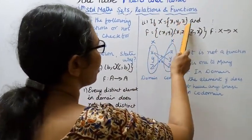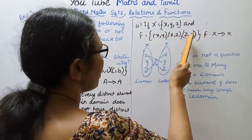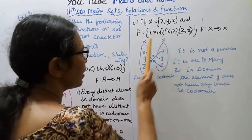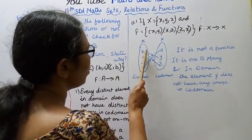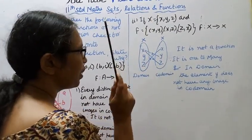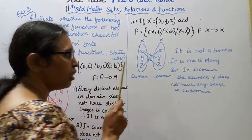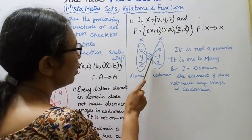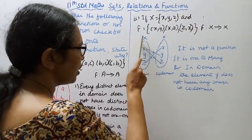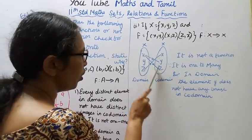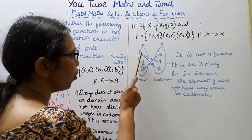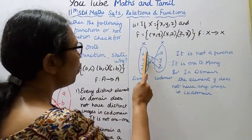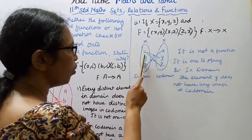If X equals {x, y, z} and F equals {(x, y), (x, z), (z, x)}. Here from X to X, the function is: x maps to y, x maps to z, and z maps to x. Is this a function? It is one to many. One element in domain maps to more than one element. It is one to many.